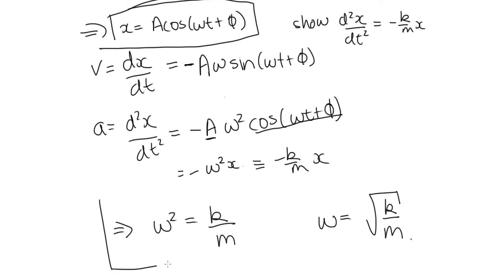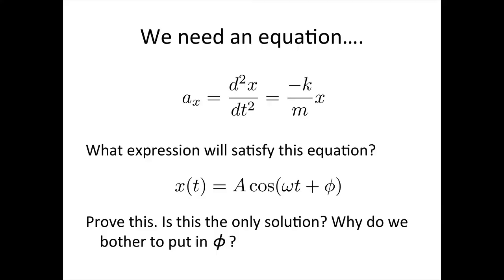So this equation actually appears on your formula sheet. This one, you're expected to know. So now a couple of questions for you to answer. Is this the only solution? And why did we bother to put in the phi?